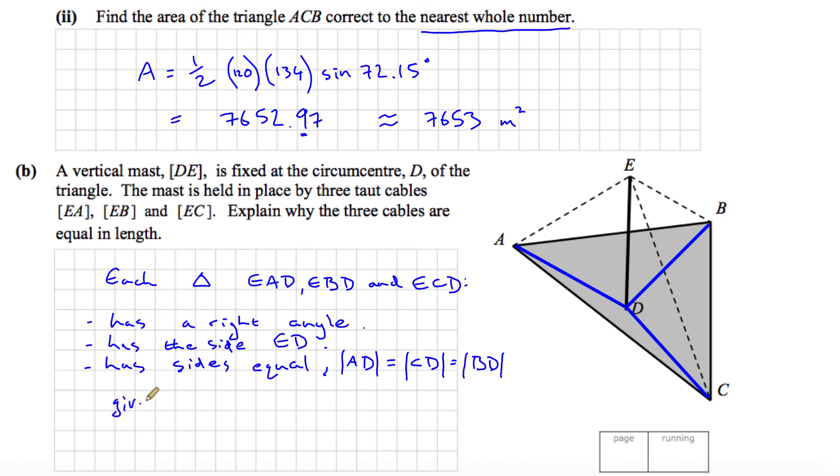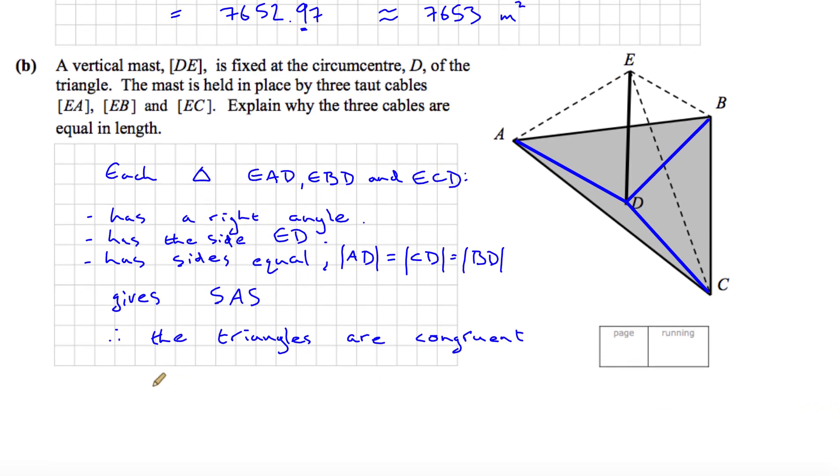So in each of these triangles what we have is side angle side. So that gives side angle side. So we can say then therefore the triangles are congruent. Congruent means identical in terms of the size of the angles and the size of the sides. You can prove congruency by side angle side, that's one of the ways you can do it. So if the triangles are congruent, you can say that the length of EA is equal to the length of EB, which is equal to the length of EC, which is what we were asked to explain. So there you go, that's the end of part B and the end of question 1.